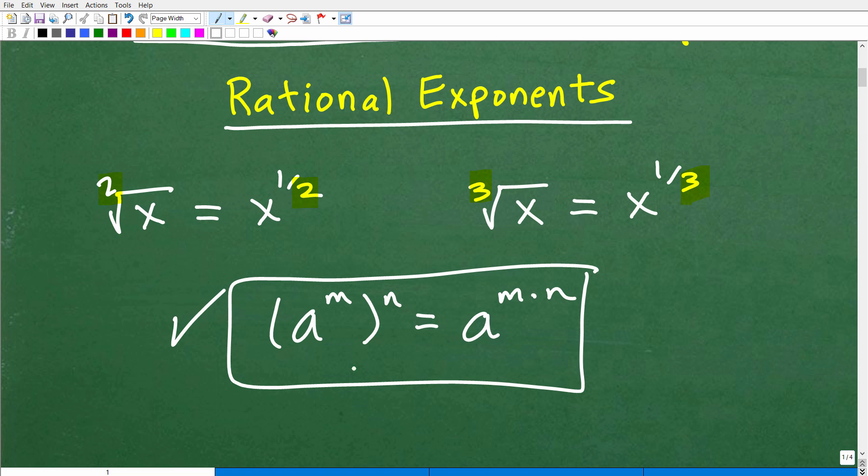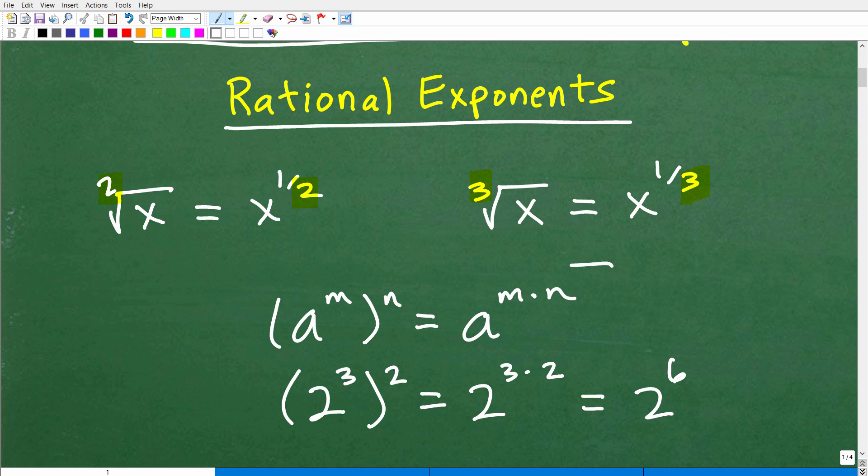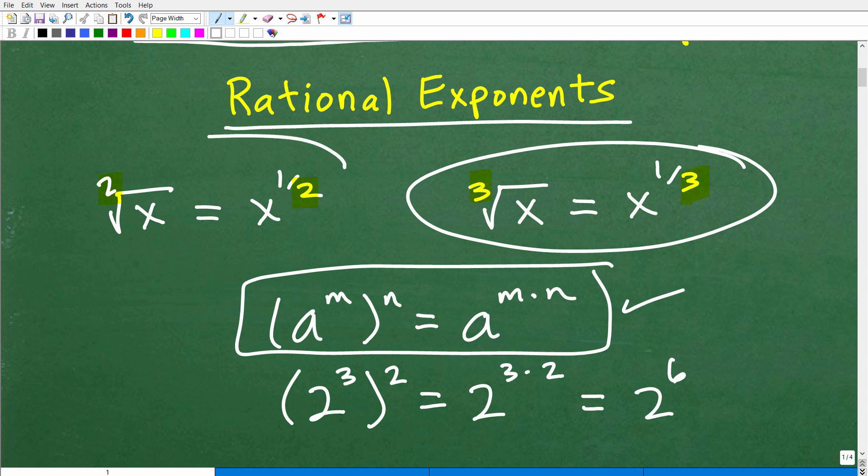Now the next thing we need to do this problem is we need to understand some of the properties of powers and exponents. And there's more than these right here, or this one right here. You need to understand. But this is the one that we're going to be using. And that is when we take a power to another power, it's equal to the outside power times inside power. And I'm going to give you an example. Let's say I had two cubed squared. Okay, two to the third power squared. That's equal to two to the three times two. Of course, that would be two to the sixth power. Okay, so this is this property right here.